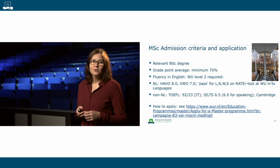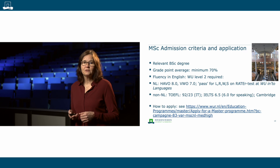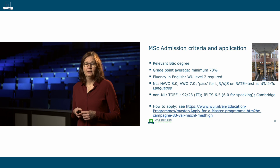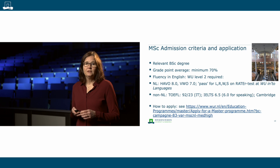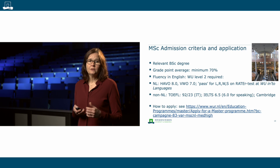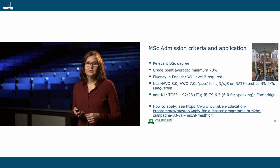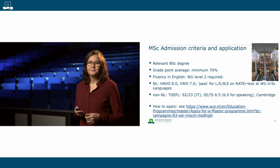To start this master, you need to have completed a relevant bachelor degree — such as a bachelor in biology, agronomy, or anything related — with a grade point average of 70% or higher. You can find on our website how this translates to grading scales of other universities. All masters at Wageningen University are taught in English, so sufficient English proficiency is required. You need to upload a valid English test to prove your English fluency.